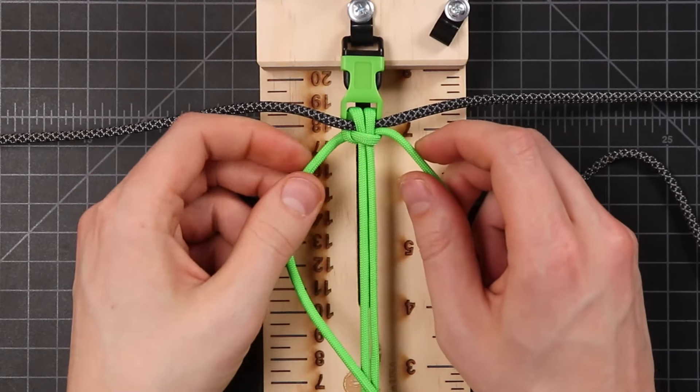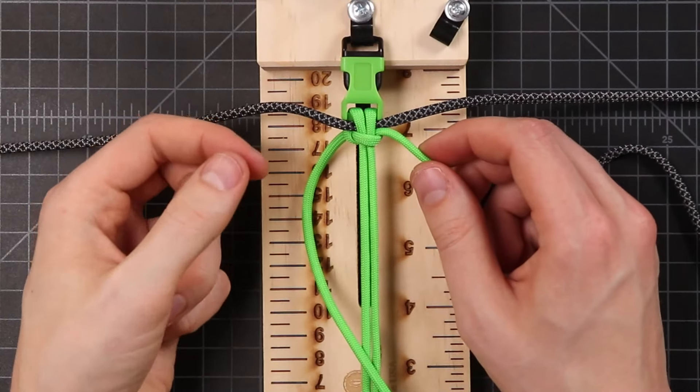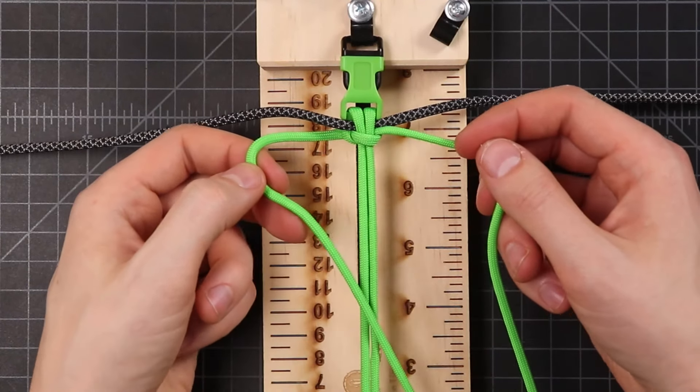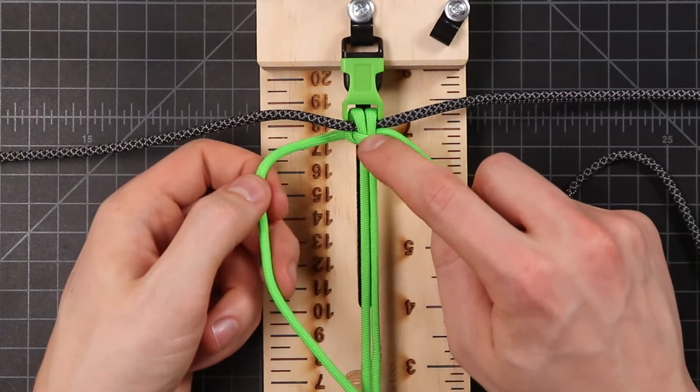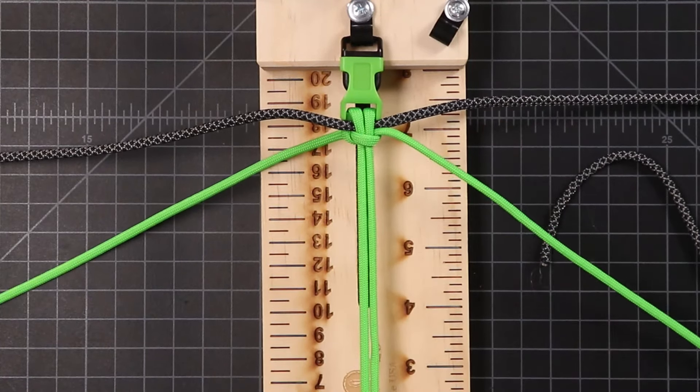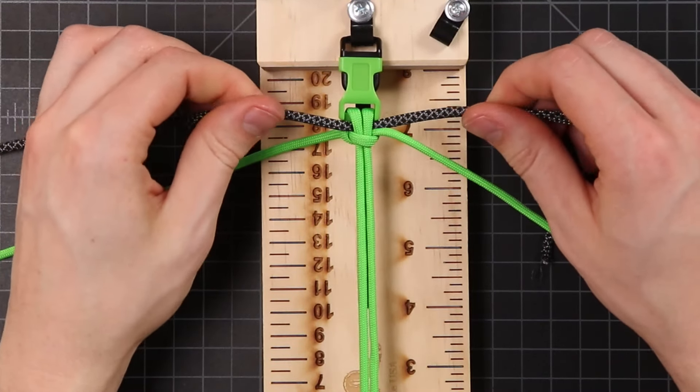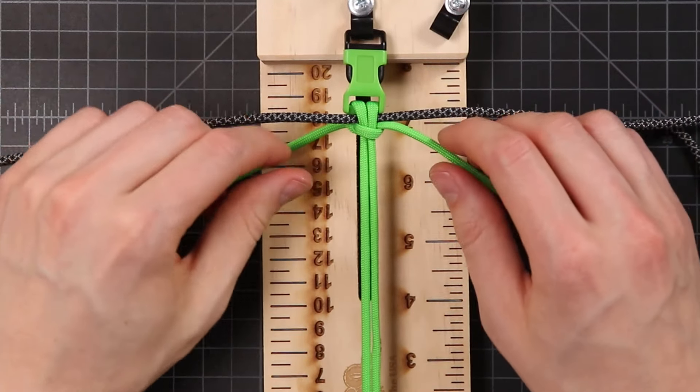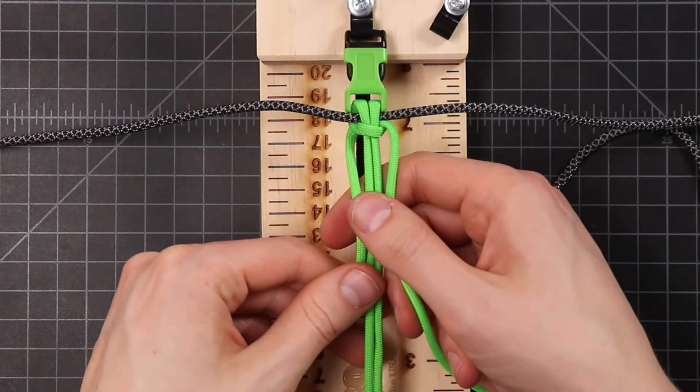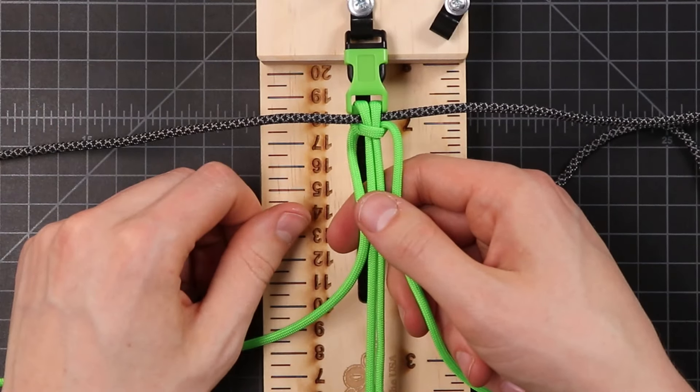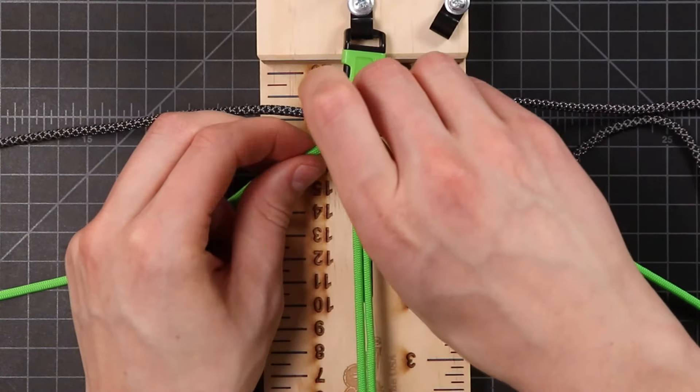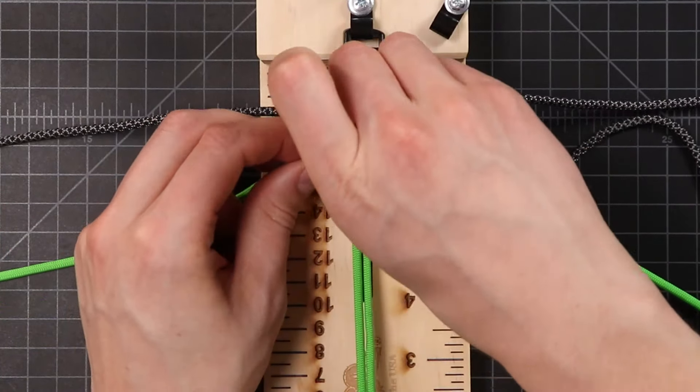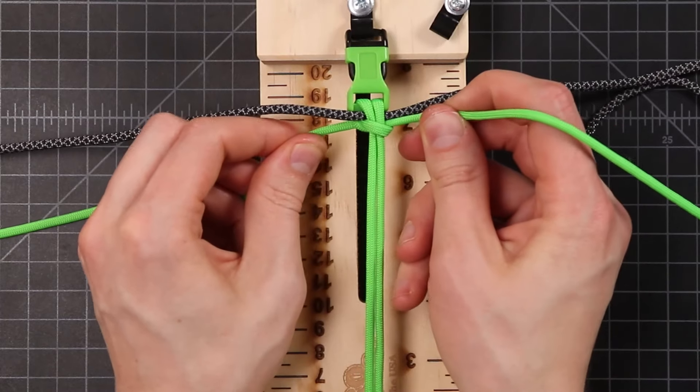So what you want to keep track of while making this, since we're going to be switching back and forth between the two colors, is that the green is always going to lead the pattern. So we just made a knot with green. So now we're going to grab onto that second color, and do the same thing. But it's important to remember which cords that next knot is being tied around. So since this cord here went over the top, it started on the right side going over to the left. We want to do the same with our gray.